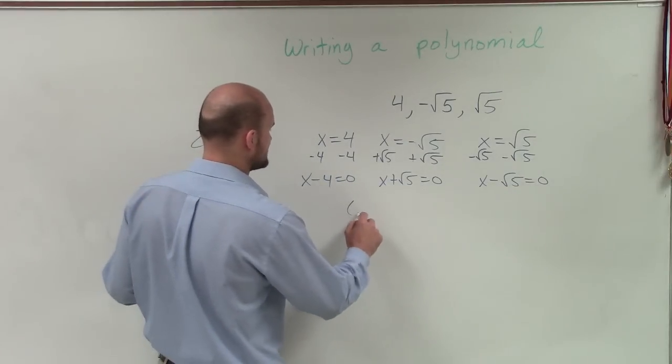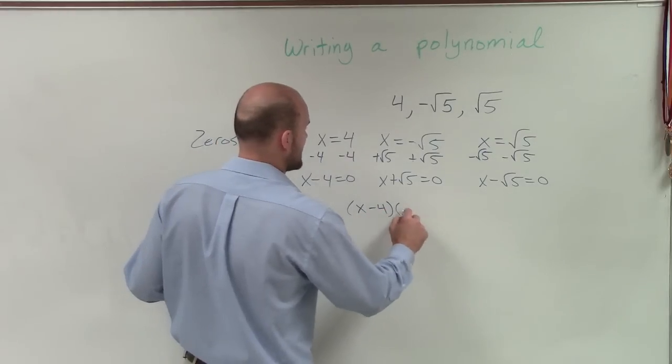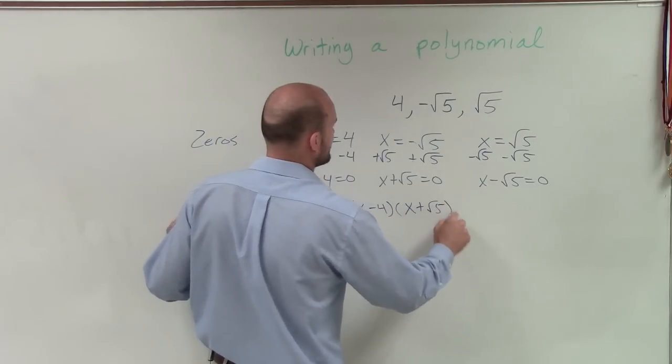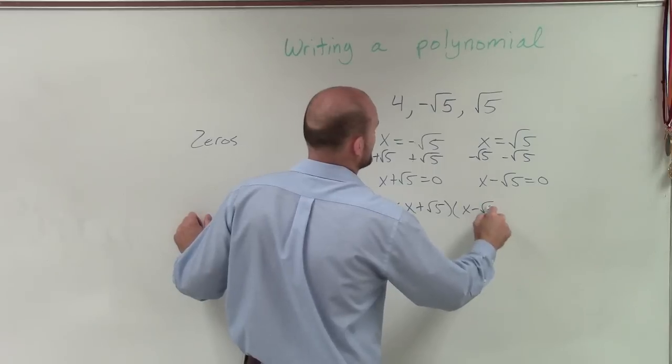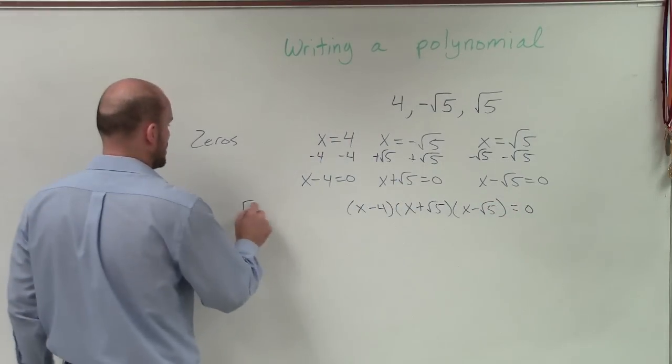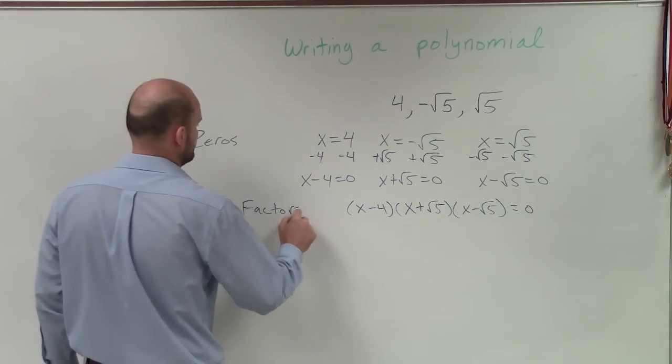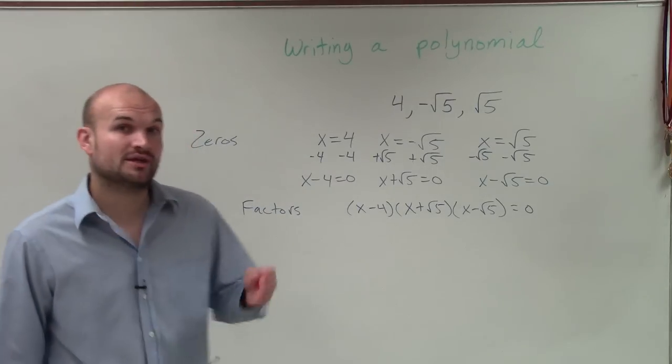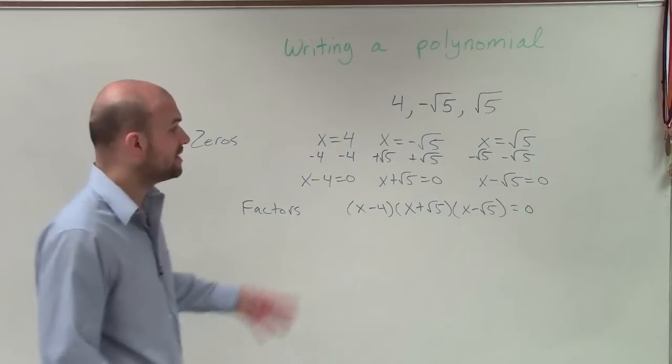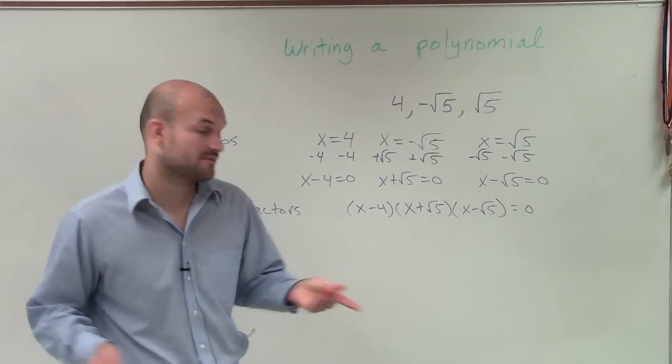So therefore, I can write these as x minus 4 times x plus the square root of 5 times x minus the square root of 5 equals 0. And these are what we call our factors. So now we have our polynomial in linear factor form. But we want to write it as a standard form of a polynomial.